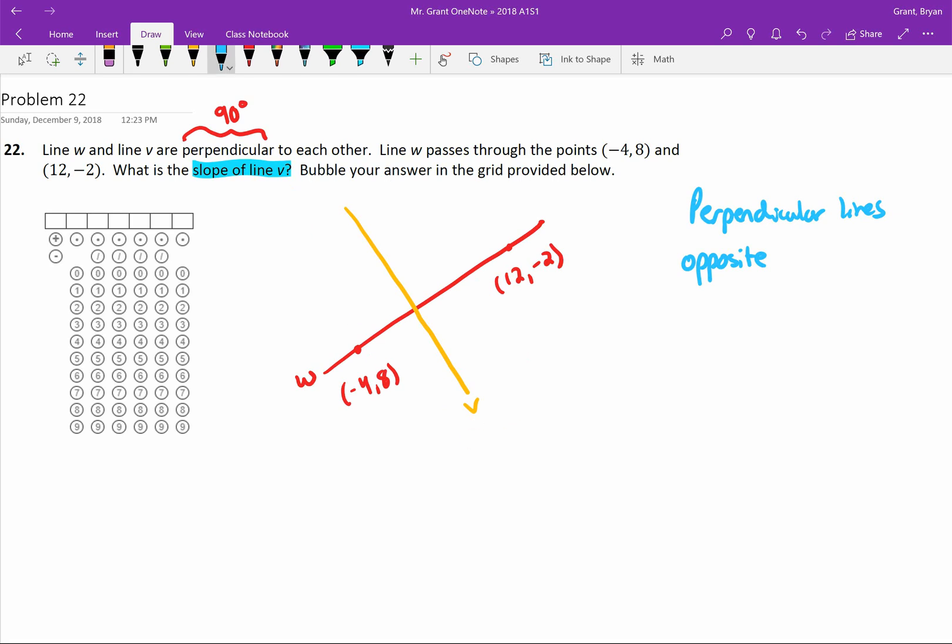So perpendicular lines have opposite, reciprocal. Now reciprocal, again, is that word. It means just a flipped over fraction. So if one slope is 3/2, the other slope is 2/3, right? Opposite reciprocal slopes.